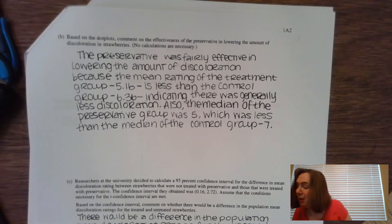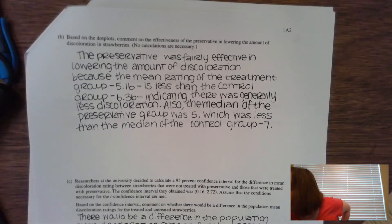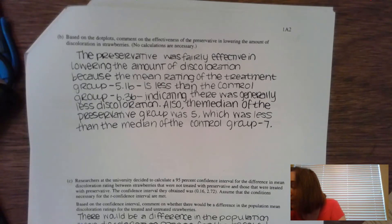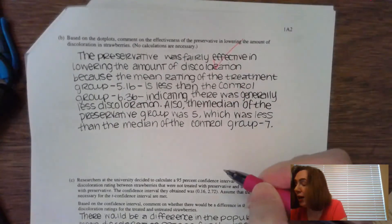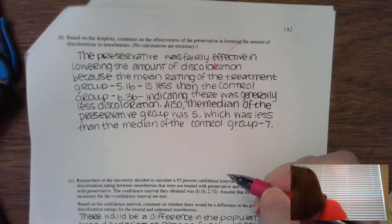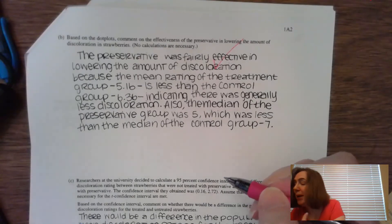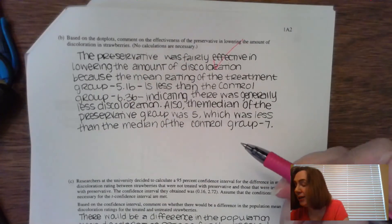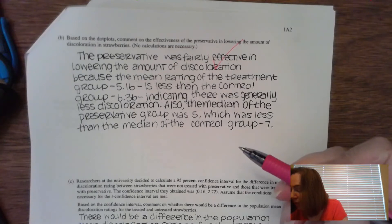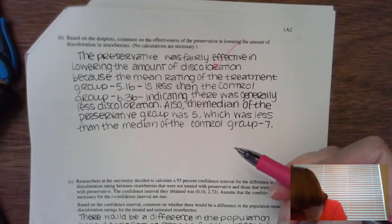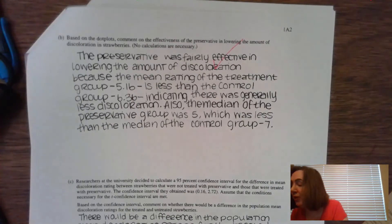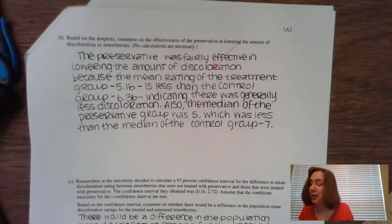No calculations necessary. You can sort of eyeball it just a little bit. But the first thing that you have to identify is answering the question: Is it effective? And the answer is yes, it is effective. And they said it is fairly effective. So I'm going to check. So that is the answer, but you have to make sure that you talk about it based on the dot plots. So what do you see in the dot plots that makes you think that it was effective?